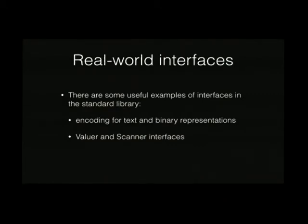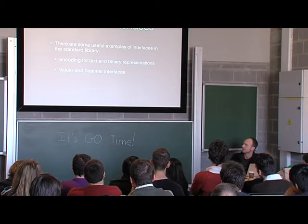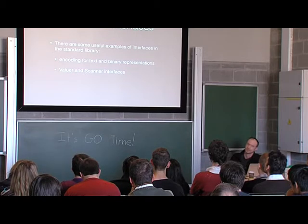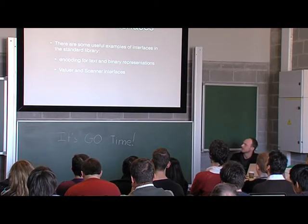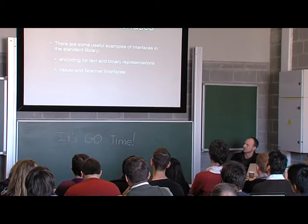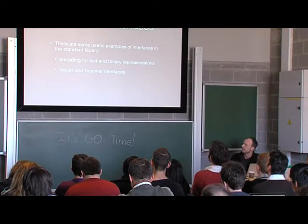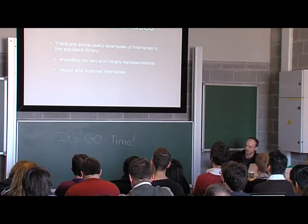The next part of this talk is looking at how interfaces are used in parts of the standard library. The first is the encoding interface, which appeared in Go 1.2 — the work was done about six months ago but shipped in December with Go 1.2. The other one is in the driver code for SQL databases, where there are a couple of interesting interfaces used to map values into database types and vice versa. The encoding interface supports two kinds of marshalling and unmarshalling: binary representations and text representations.